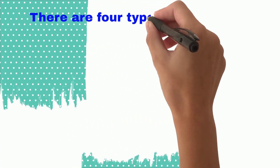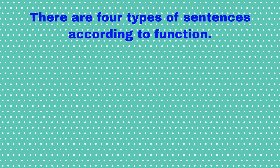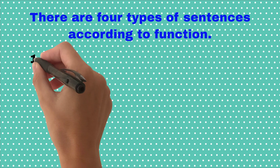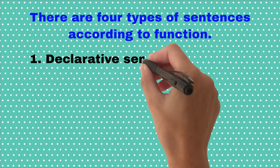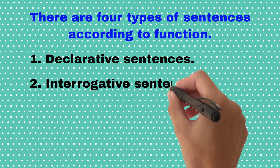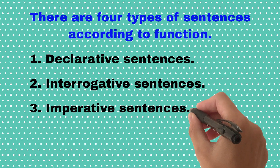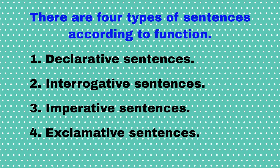There are four types of sentences according to function: declarative sentences, interrogative sentences, imperative sentences, and exclamative sentences.